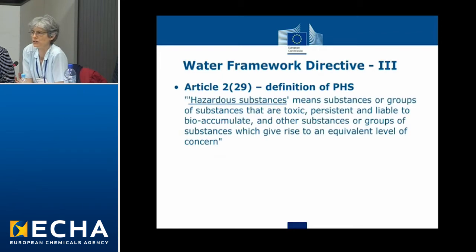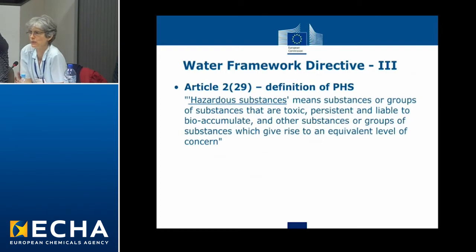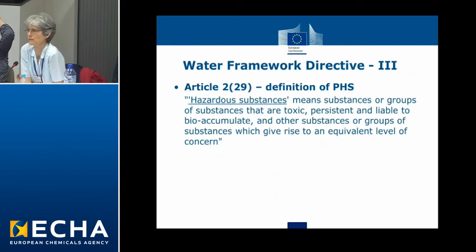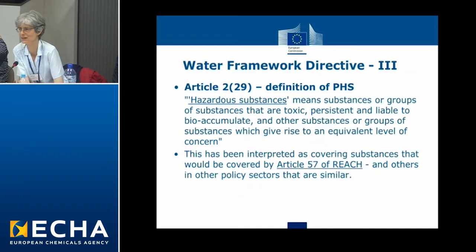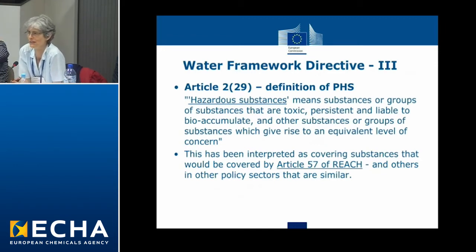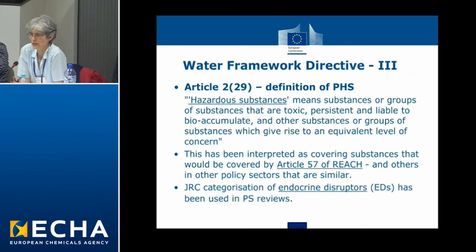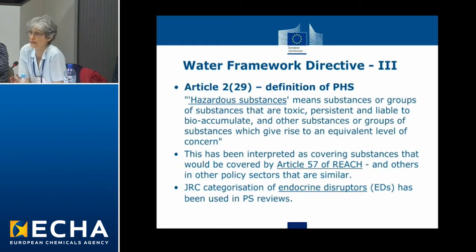To define what we mean by priority hazardous substances: there is a definition which refers to hazardous substances as substances or groups of substances that are toxic, persistent and liable to bioaccumulate, and other substances or groups of substances which give rise to an equivalent level of concern. This has been interpreted as covering substances that would be covered by Article 57 of REACH and others in other policy sectors that are similar. We've used, in our reviews of the priority substances list, the Joint Research Centre categorisation of endocrine disruptors.